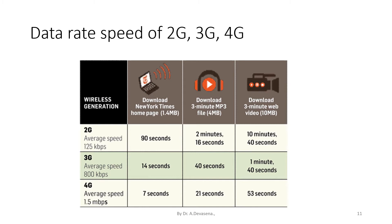Now for 4G: the average speed is 1.5 MB per second. For downloading 1.4 MB of data, 4G takes only 7 seconds. For downloading a 3-minute MP3 file of 4 MB capacity, 4G takes 21 seconds. For downloading a 3-minute web video of 10 MB capacity, 4G takes 53 seconds. This is very small compared to 2G and 3G — this completes the comparison of 2G, 3G, and 4G in terms of downloading data.